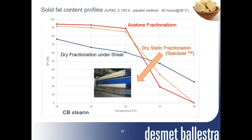This slide shows solid fat content profiles using the IUPAC parallel-tempered method of three types of cacao butter sterin fractions. In blue, a sterin obtained after dry fractionation under shear. In red, a sterin from acetone fractionation with its very steep melting profile between 30 and 35°C. In dotted red, a sterin from dry fractionation in static mode obtained with the StatoCrystal technology. With a similar yield, the melting properties of this dry sterin are very close to those of a solvent sterin.